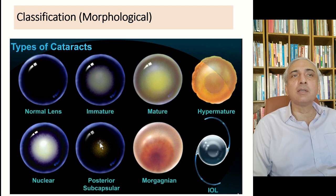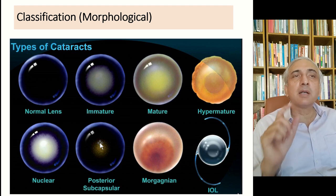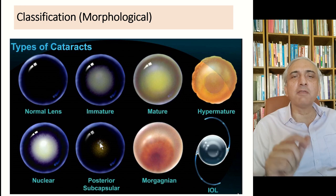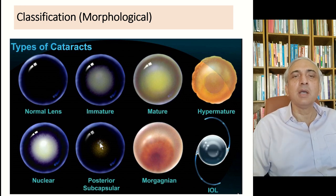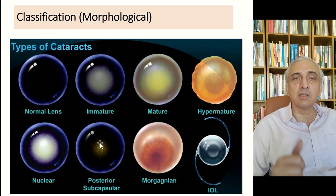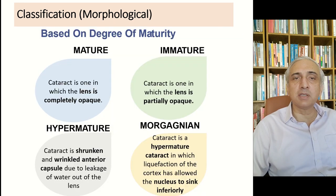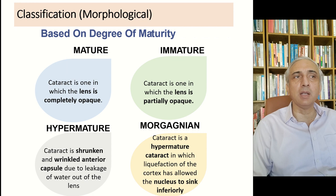The posterior subcapsular cataract is important — it may be very small but causes significant visual loss. People may have 6/9 vision and still request surgery because of a posterior subcapsular cataract, while others with a plus three nuclear sclerosis at 6/9 vision may decline surgery, saying they are managing well.